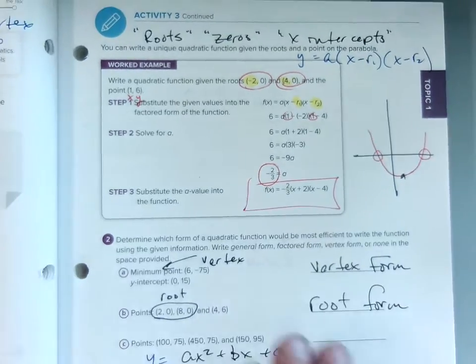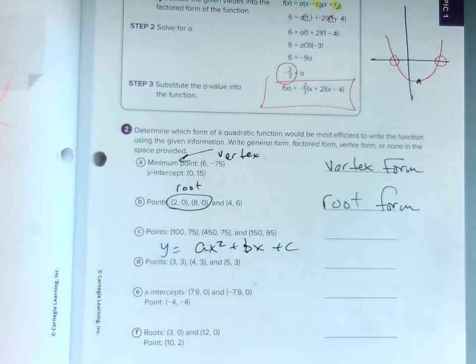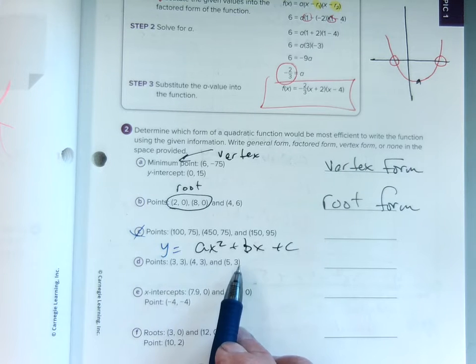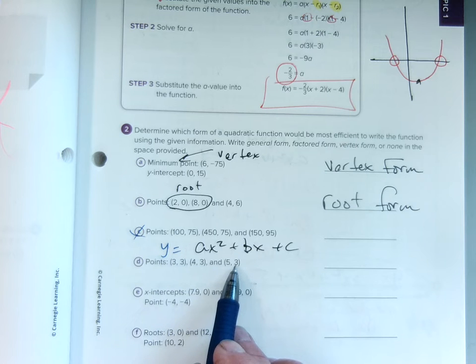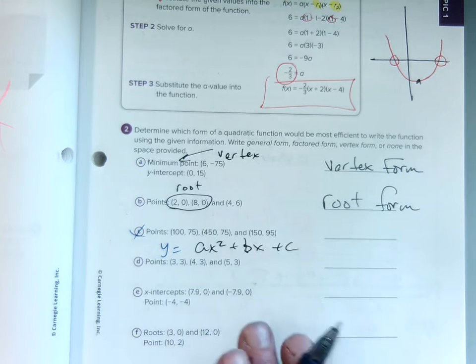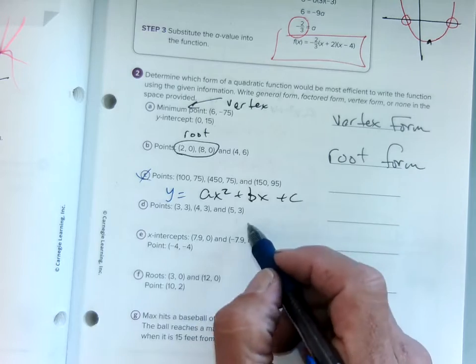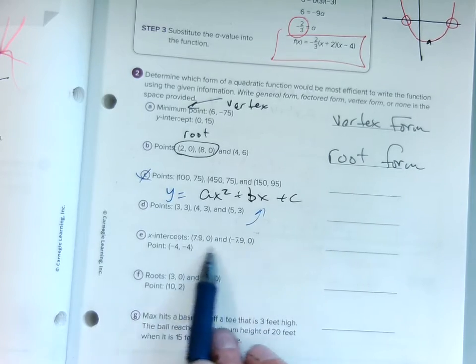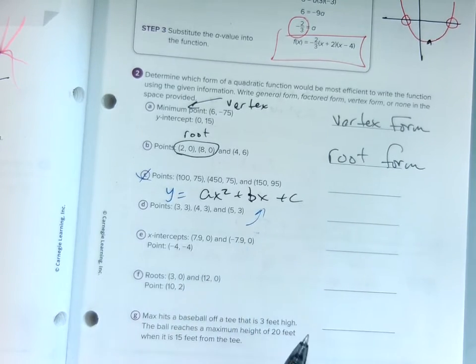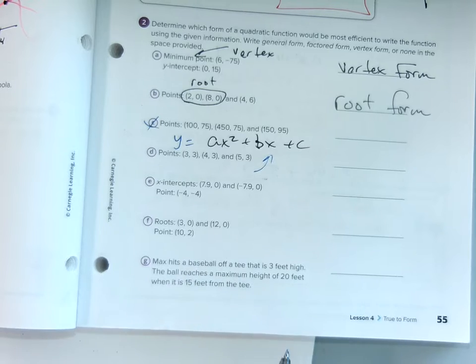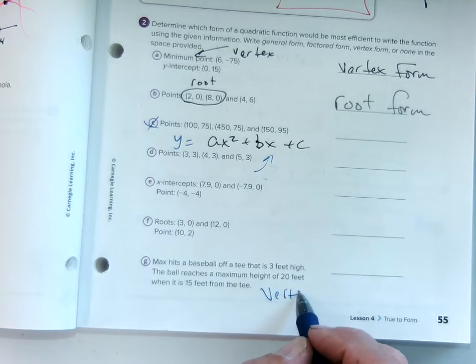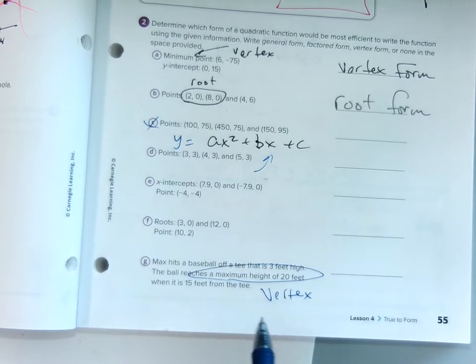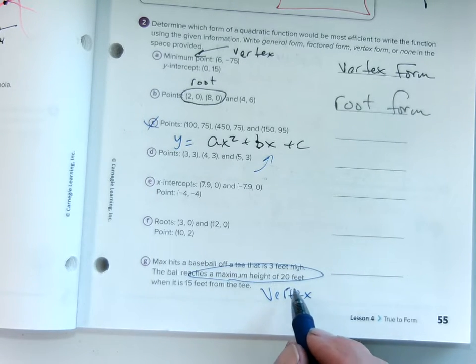And then we just talked about when do we pick certain things. This one we'll talk about specifically tomorrow. On this one, we will talk about this one specifically. So they both have 3's. This one you can do. We'll talk about this one again tomorrow. This one we can do by intercepts or roots. This one has its roots. This one has a vertex because of maximum height. So we could use vertex form.